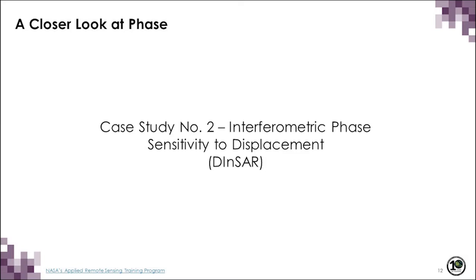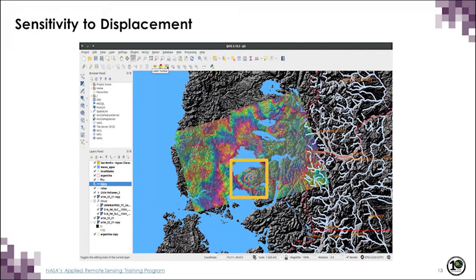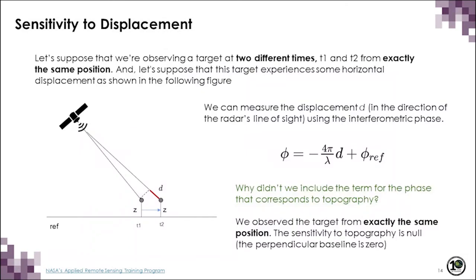Case Study 2 is about the interferometric phase and its sensitivity to surface displacement, also known as Differential Interferometric SAR or DInSAR. This image shows an example of a differential interferogram generated using Sentinel-1 images over the Cabulco volcano in southern Chile. This volcano started erupting in 2015 and surface displacement was measured to be around 13 centimeters. To be sensitive to displacement, the ideal configuration is for both satellites to be in the same position so that the topographic phase term is null — no perpendicular baseline.